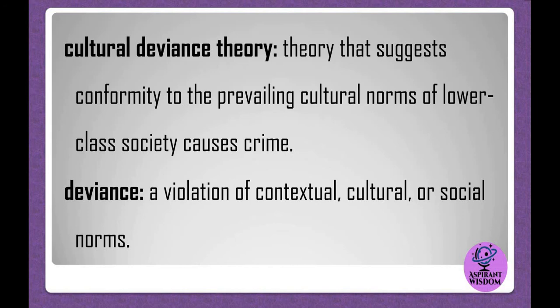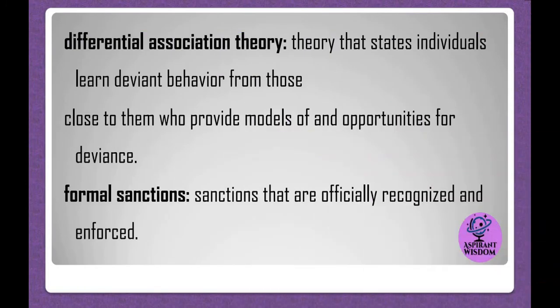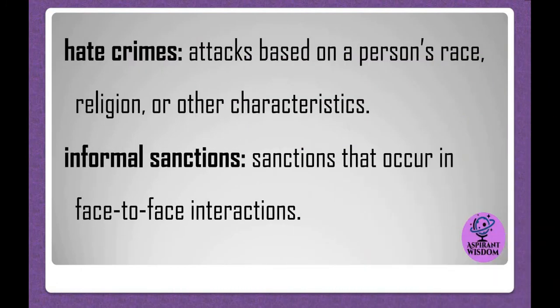Deviance: a violation of contextual, cultural, or social norms. Differential association theory: a theory that states individuals learn deviant behavior from those close to them who provide models of and opportunities for deviance. Formal sanctions: sanctions that are officially recognized and enforced. Hate crimes: attacks based on a person's race, religion, or other characteristics. Informal sanctions: sanctions that occur in face-to-face interactions.